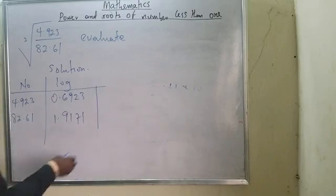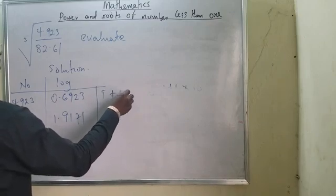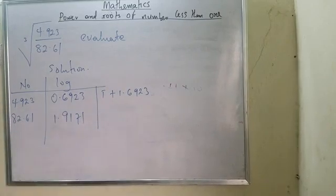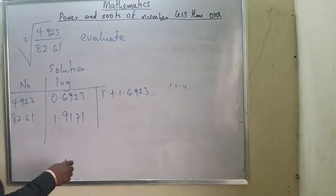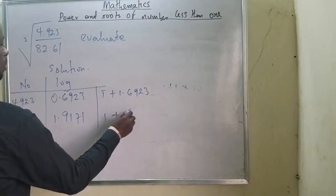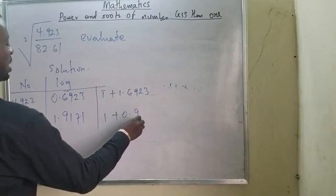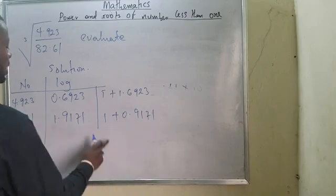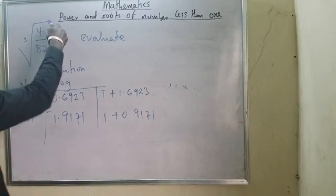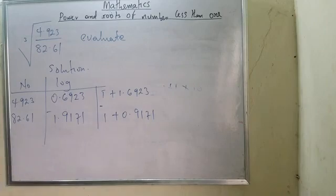I get log of 4.923 as 0.6923 and log of 2.61 as 1.4161. I can now also write 0.6923 as bar 1 plus 1.6923. Note that bar 1 minus 1 becomes zero, so that manipulation does not change the value.